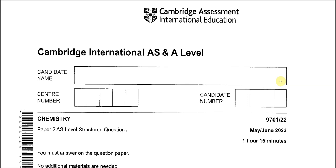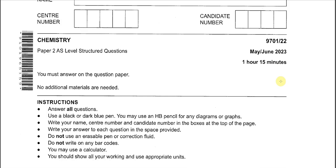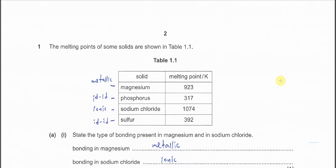This is May/June 2023 Paper 2 Variant 2 Question 1, about bonding in solids. We have magnesium, phosphorus, NaCl, and sulfur. Magnesium has metallic bonding. Phosphorus has two types: between molecules it is id-id, and within the molecule it is covalent. Sodium chloride has one type: ionic bonding. Sulfur, similar to phosphorus, has id-id between molecules and covalent within the molecule.